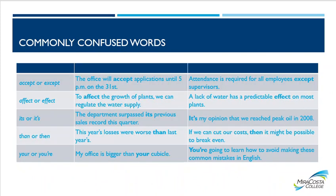Here is a chart of commonly confused words — and these can trip up even the instructor. The pairs covered include: accept/except, affect/effect, its/it's, then/than, and your/you're. The chart shows the differences in meaning and when to use each one.